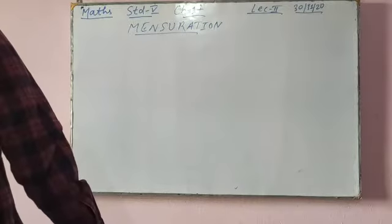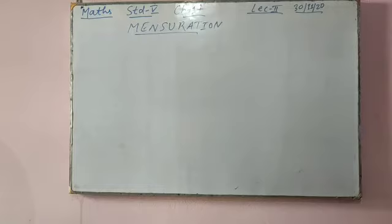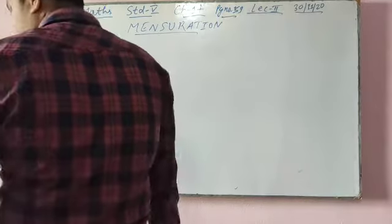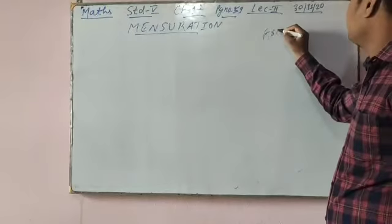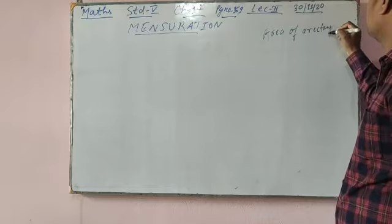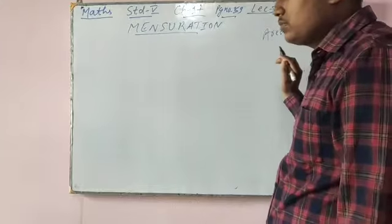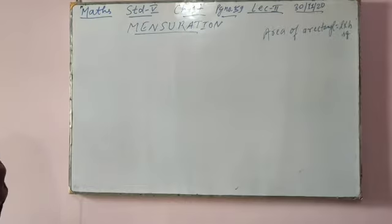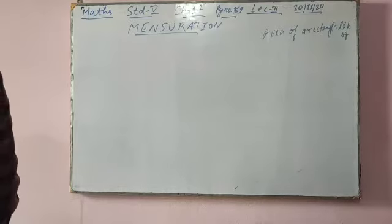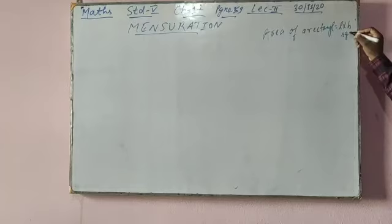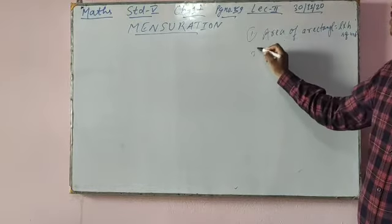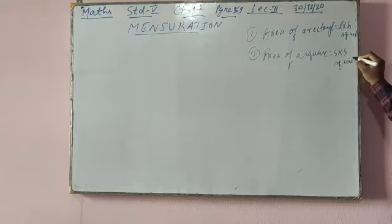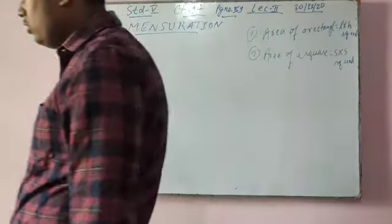Here we will read area of triangle, area of square, area of rectangle. So without wasting time, you have to know some formulas. The area of a rectangle formula is L into B, and it is in square units. Area of square is side into side, also in square units. Perimeter is in simple units, area is in square units, and volume is in cubic units.